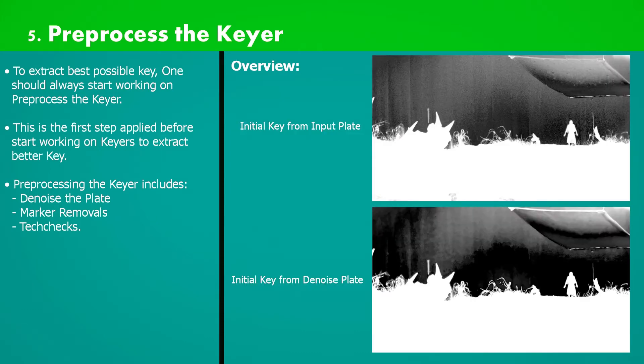Comparing with our original matte we can see much difference. We have nice soft edges at denoise key as compared to sharp and grainy edges on original input plate key. By looking at this result, one must always process the denoise operation on plate prior to work on key. This is a must step.